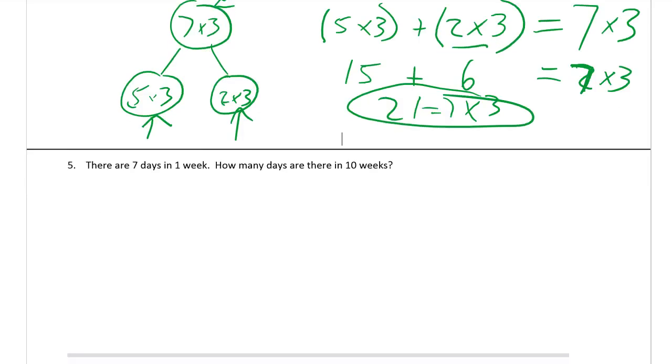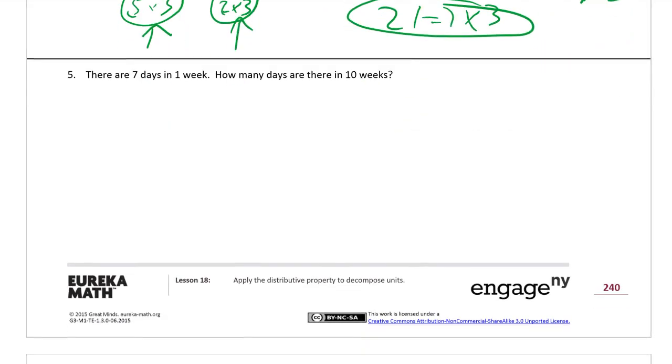We're down to our last one. There are seven days in one week. How many days are there in ten weeks? We've got ten weeks. We have seven days in a week. So, that's groups of seven. Seven in each group. And we have ten groups. So, it's going to be ten groups of seven. Because it's going to be ten weeks of seven days in each week. So, it's going to be ten times seven. And we can break this up any way we want.